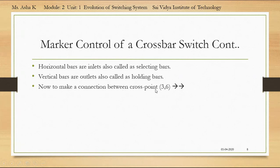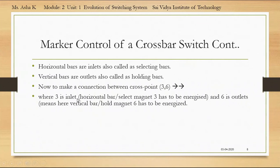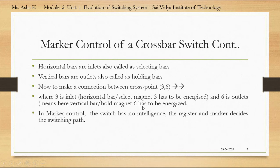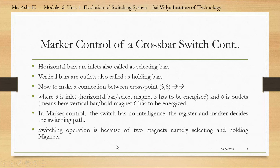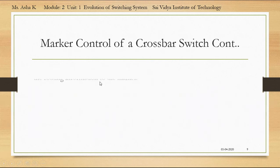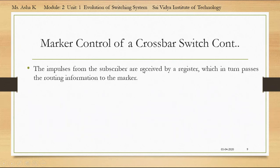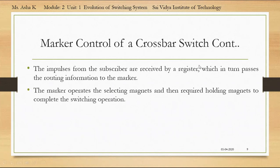To make a connection between cross point 3 and 6: inlet 3 corresponds to the selecting magnet 3 which has to be energized, and outlet 6 means the vertical bar or hold magnet 6 has to be energized. In the marker control, since the switch has no intelligence, the register and marker decide the switching path. Switching operation is achieved by two magnets: the selecting magnet and the holding magnet. Impulses from subscribers are received by a register, which passes routing information to the marker. The marker operates the selecting magnets and then the required holding magnets to complete the switching operation.